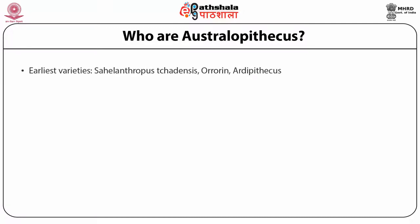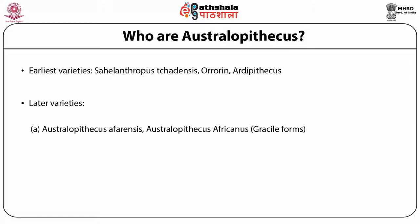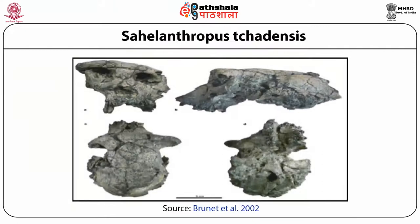The earliest varieties are Sahelanthropus, Orrorin, and Ardipithecus. The later varieties are Australopithecus afarensis and Australopithecus africanus, known as the gracile form, and Australopithecus robustus and Australopithecus boisei as the robust form. We will now discuss the fossil hominids discovered so far in the chronological order of appearance in the record, except that the robust Australopithecus are kept together.